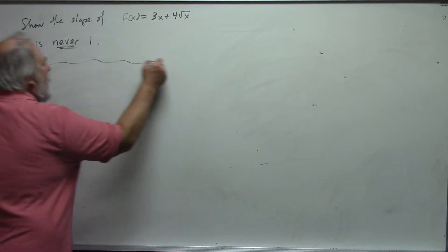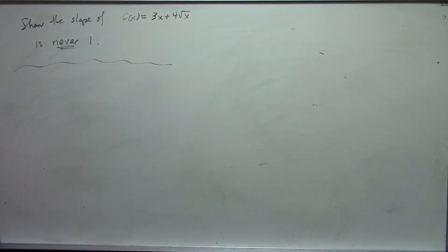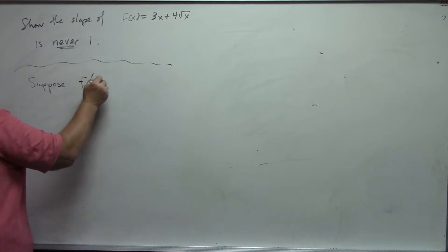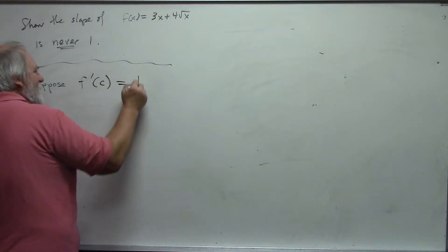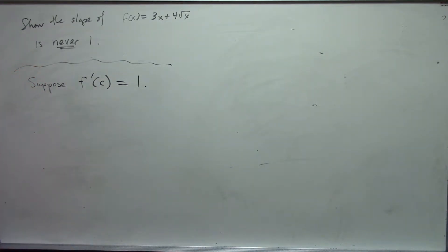The way we do that is to assume that there is some value that makes what I want to happen true. So, if I want to try and show this, the first thing that we'll do is we will suppose that the derivative f prime at some value c, I don't know what it is, but we'll suppose the derivative at some value c is 1. We'll suppose that the derivative does equal 1 somewhere.